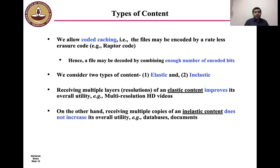We consider two different types of contents in the case of bipartite network. The first thing is that we allow coded caching. That is, files may be encoded by a rateless erasure code. For example, a Raptor code. Hence, a file may be decoded by combining enough number of encoding bits. Again, the contents could be of two types. The first is elastic and the second one being inelastic. This is how they are defined.